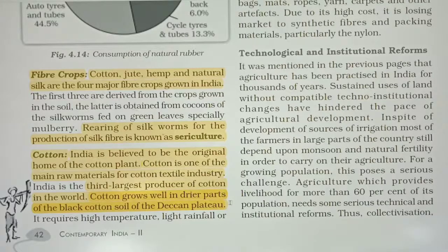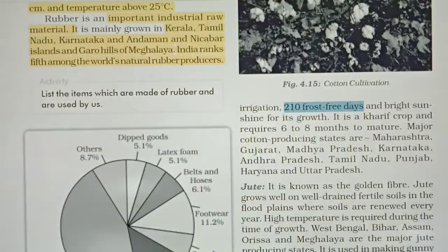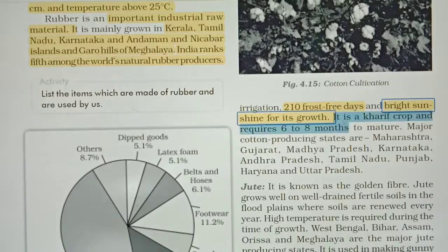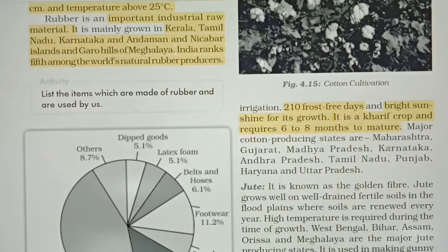Cotton is found in the Deccan Plateau and central Gujarat. It requires high temperature, light rainfall or irrigation, 210 frost-free days, and bright sunshine for its growth. Cotton grows well in black cotton soil of the Deccan Plateau. It is a kharif crop and requires 6 to 8 months to mature.